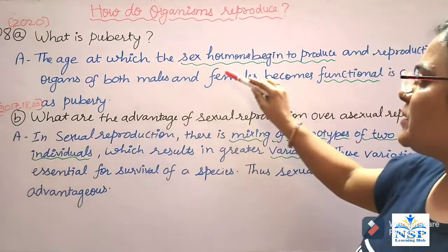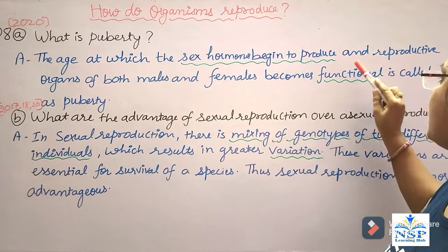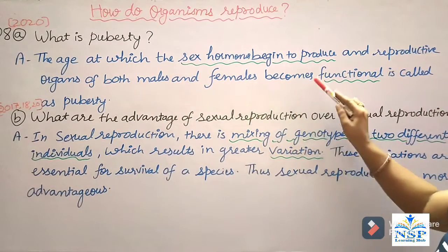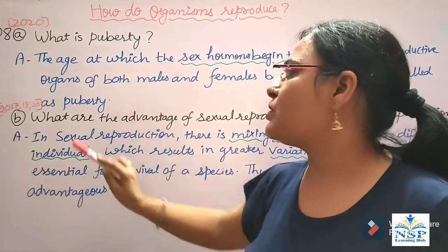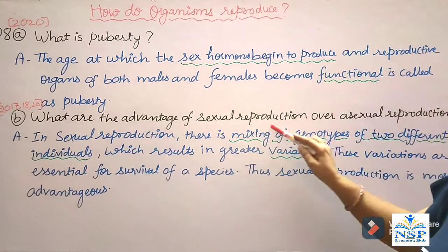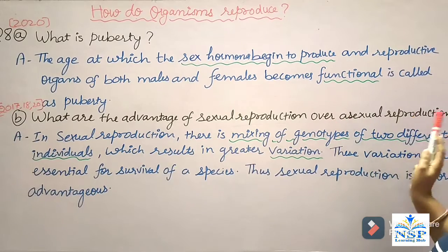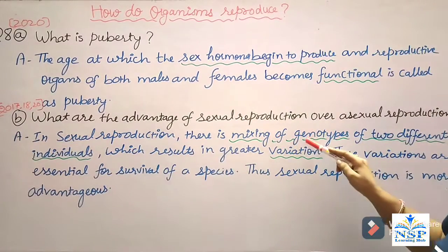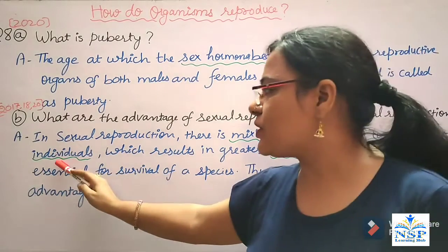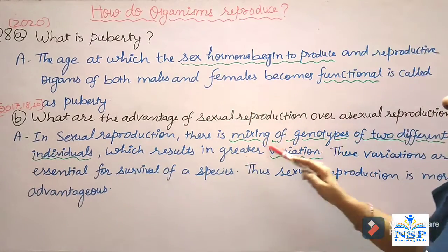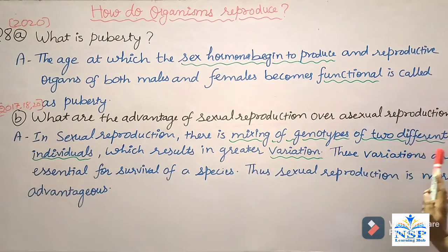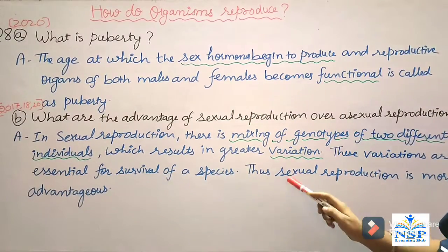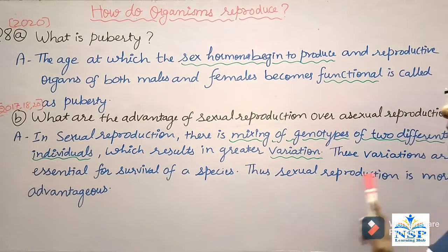The age at which sex hormones begin to be produced and the reproductive organs of both males and females become functional is called the puberty stage. What are the advantages of sexual reproduction over asexual reproduction? In sexual reproduction, there is mixing of genotypes of two different individuals, which results in greater variation. These variations are essential for the survival of a species. Thus, sexual reproduction is more advantageous.